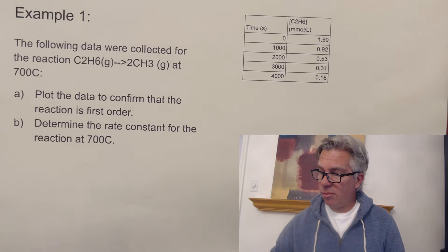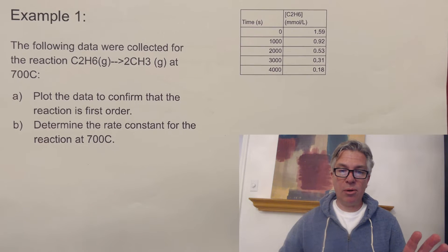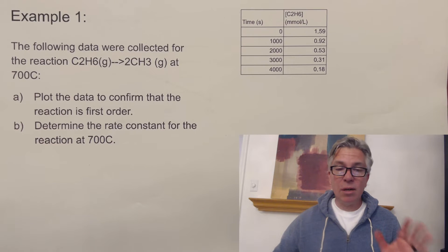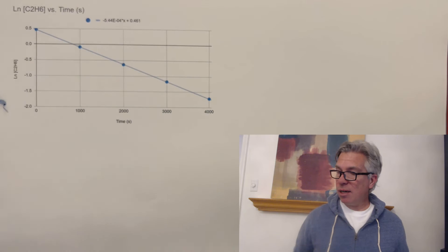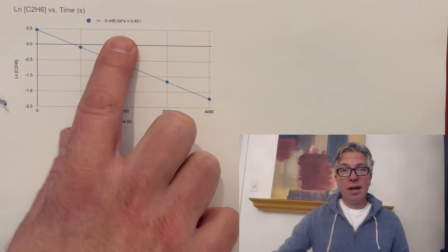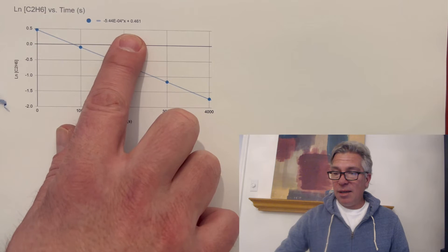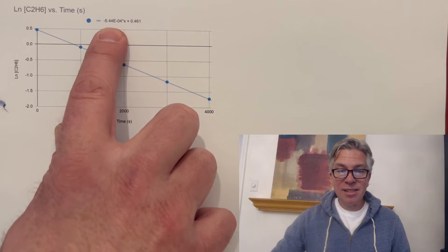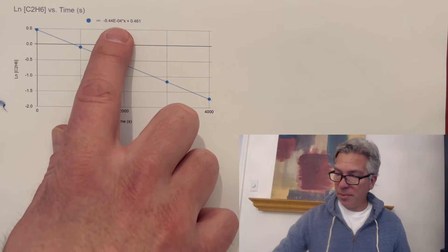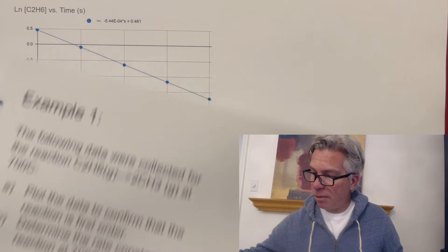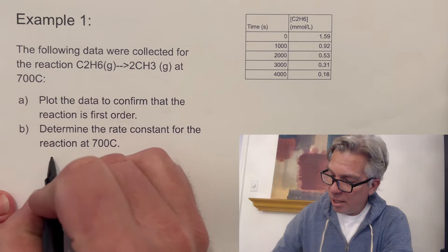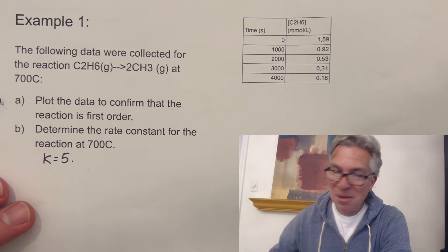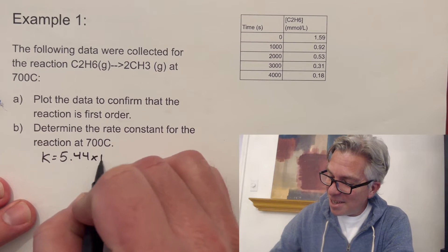Back at the original question, it says, determine the rate constant for the reaction. And you might be thinking, oh boy, I'm going to have to do some math here. And it's just going to be ugly. Well, great, good news. You don't have to do it because if you tell your spreadsheet to give you the equation for your line and put it on your graph, that equation is in the form Y equals MX plus B. And the M is the slope. And guess what? That is the rate constant. So I've got a rate constant here of 5.44 times 10 to the minus fourth. We'll say K equals 5.44 times 10 to the minus fourth.